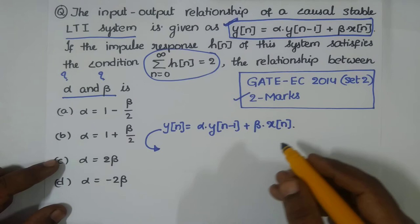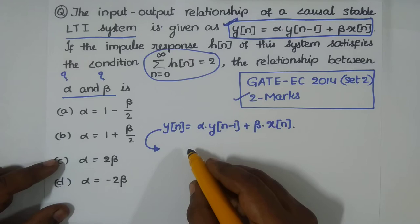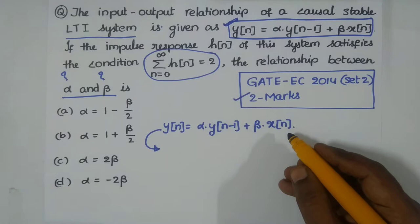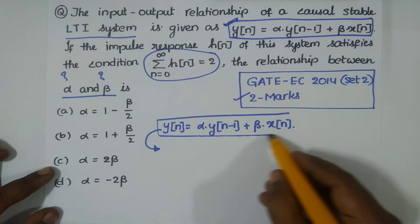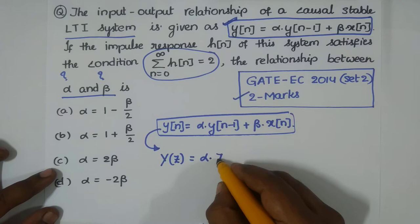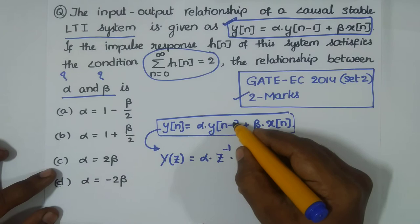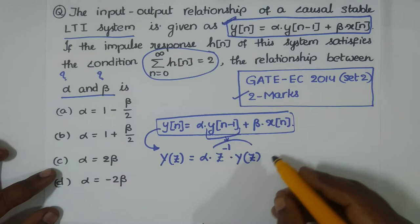Systems described by linear constant coefficient difference equations can be analyzed very easily using Z-transforms. Now, directly applying the Z-transform: Y(z) = α·z⁻¹·Y(z) + β·X(z), since a time shift of one sample in the time domain corresponds to multiplication by z⁻¹.